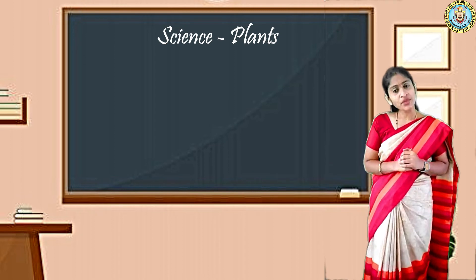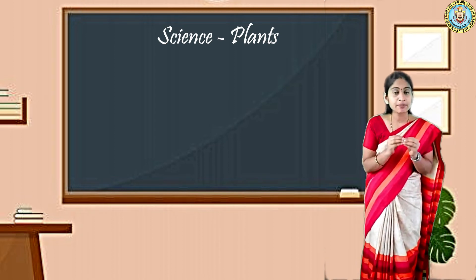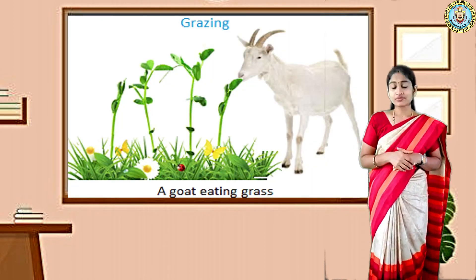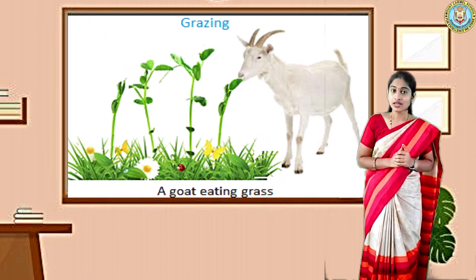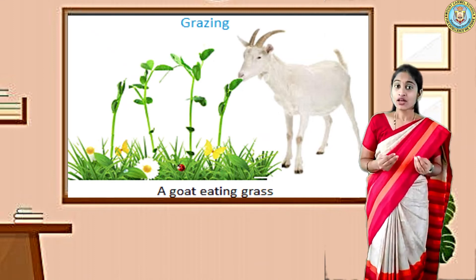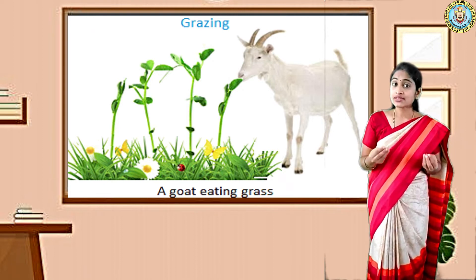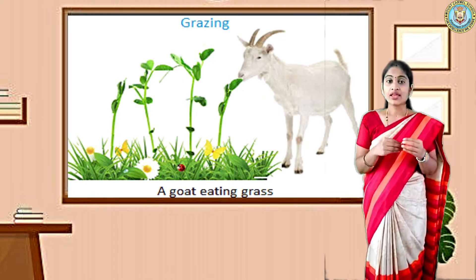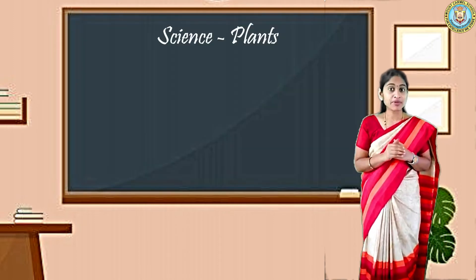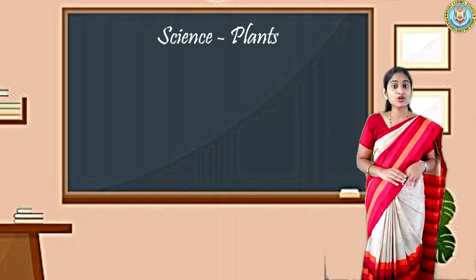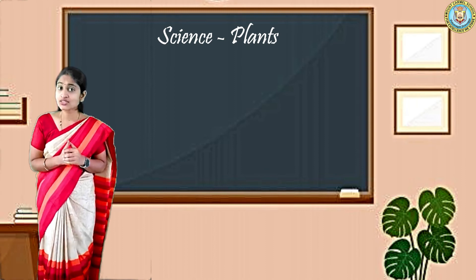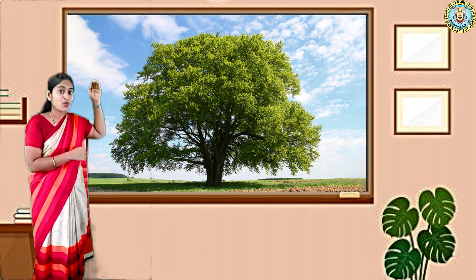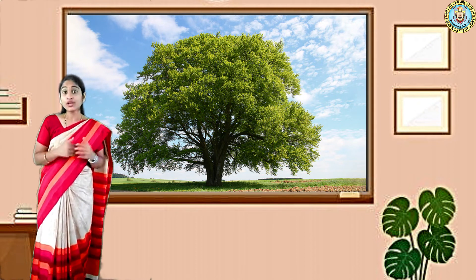Now let us move on to the dependence of plants and animals. Animals and plants are interdependent with each other. Interdependent means they are dependent on each other. Animals eat plants, so plants are the food source for animals. The products from animals are eaten by human beings, so indirectly human beings are also dependent on plants. Plants also give us shelter, and for animals and birds, plants and trees are very much more important. During the photosynthesis process, plants also provide oxygen.